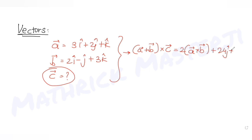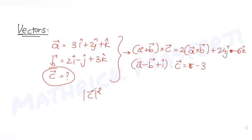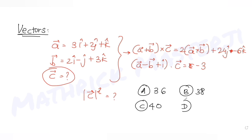The second condition is that (a − b + i) · c = −3. The question asks us to find the square of the magnitude of vector c. The answer choices given are 36, 38, 40, and 42. We need to determine which one is correct.